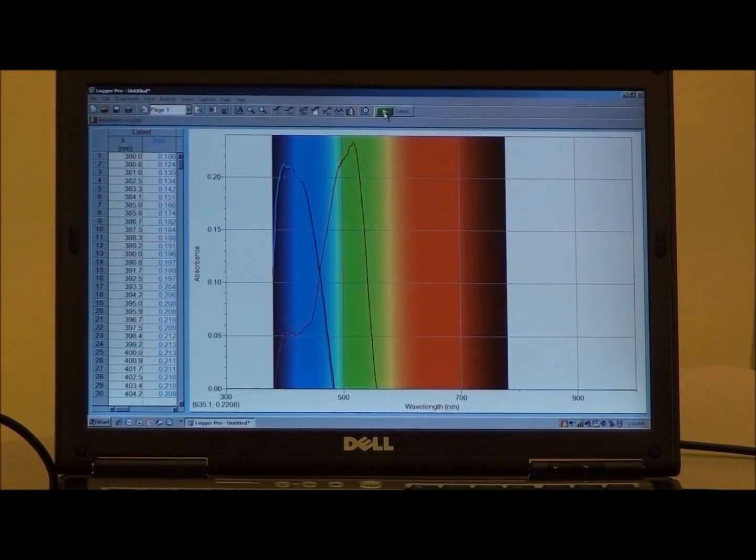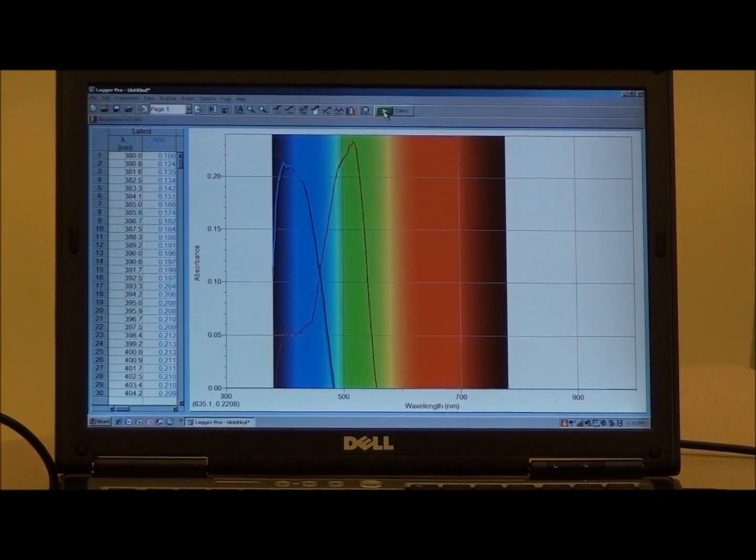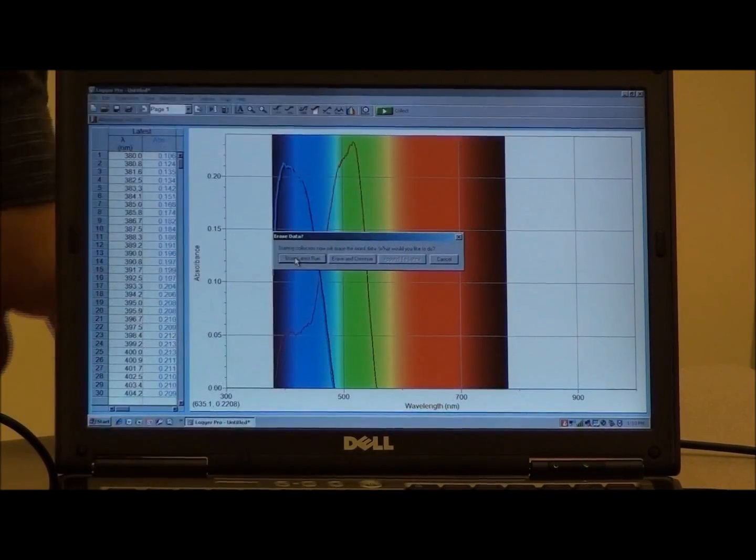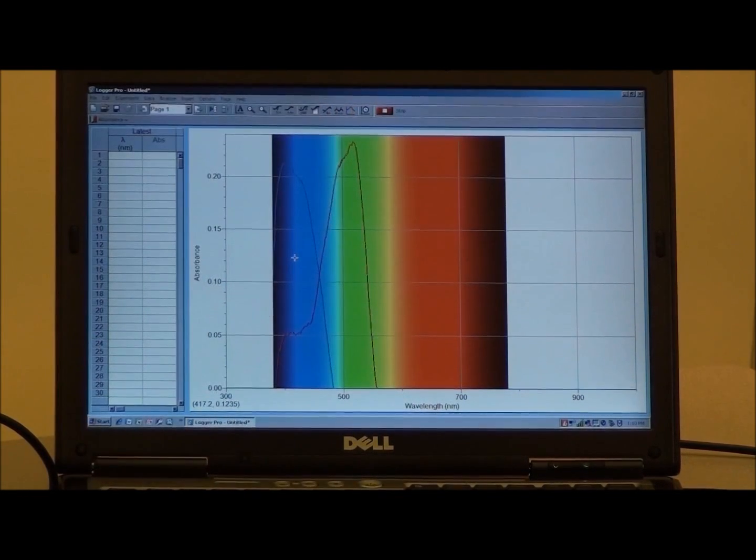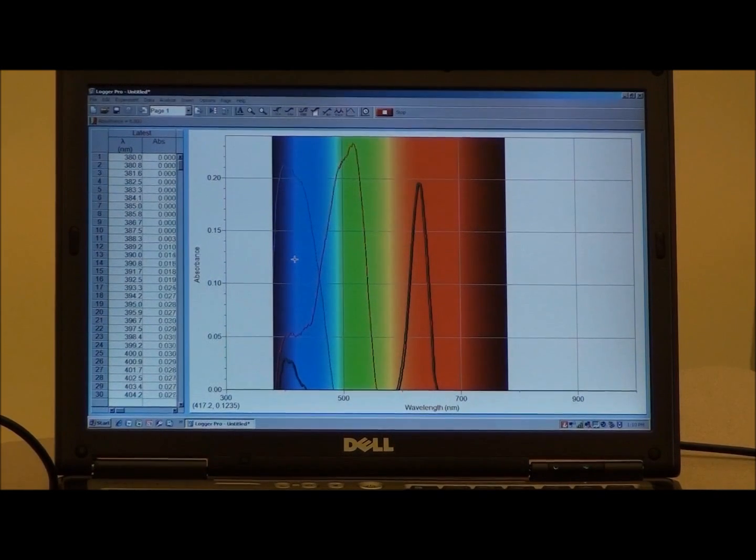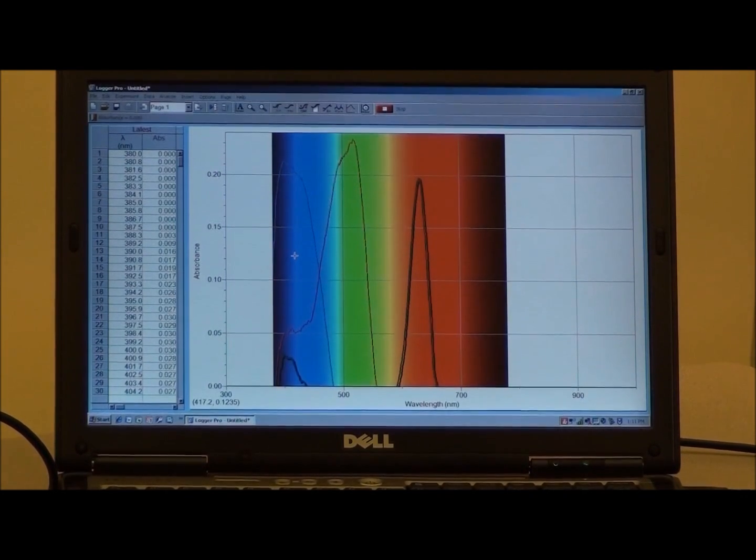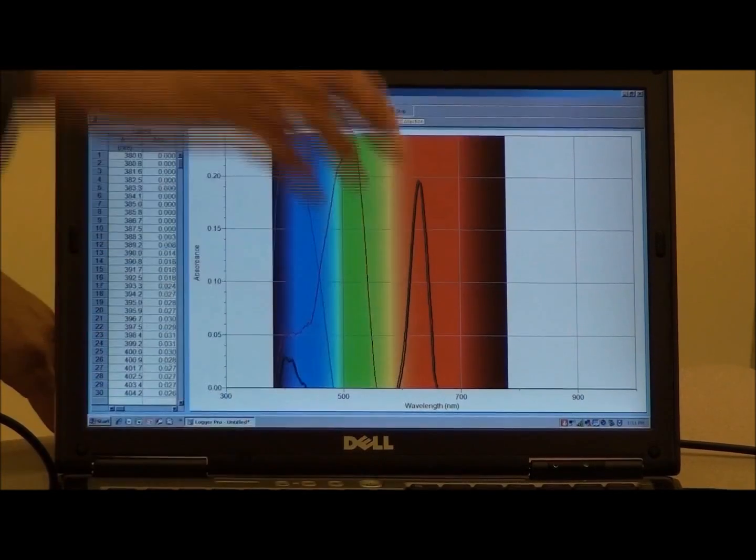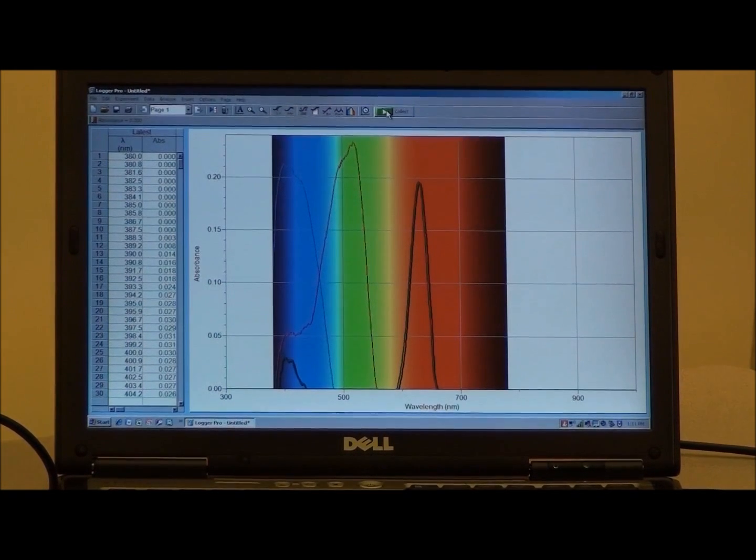The next solution that we will measure is a blue solution. We see the blue solution strongly absorbs in the red region and it also has a minor component in the blue and violet regions. What these three solutions show are that the primary colors have very different absorption spectra. If one were to measure a solution with those colors, one can choose the appropriate wavelength at which to make the measurements.